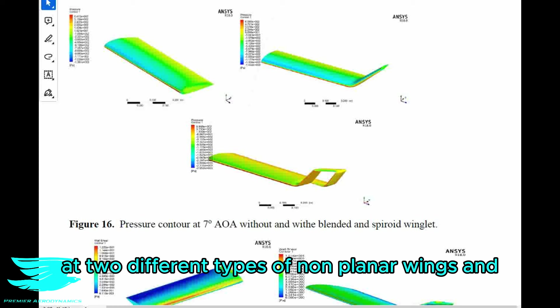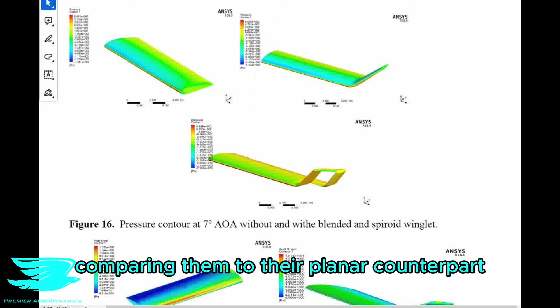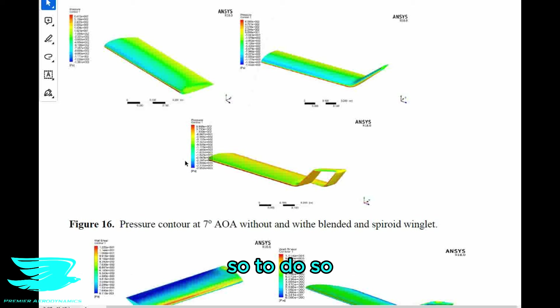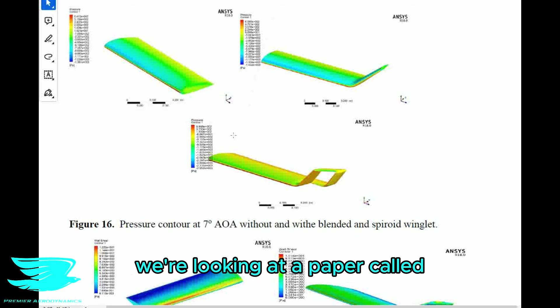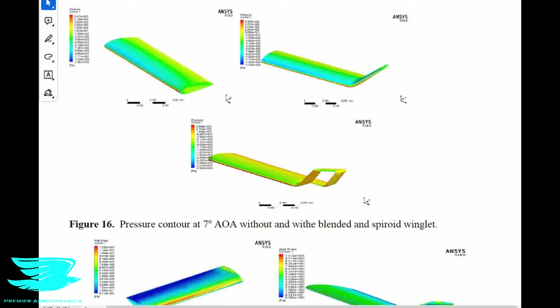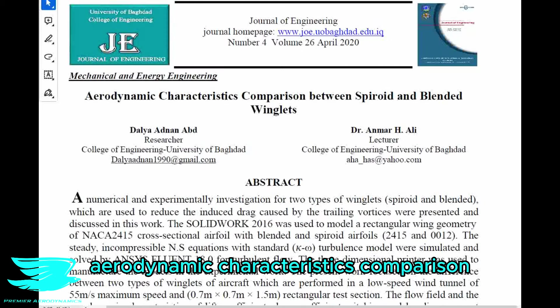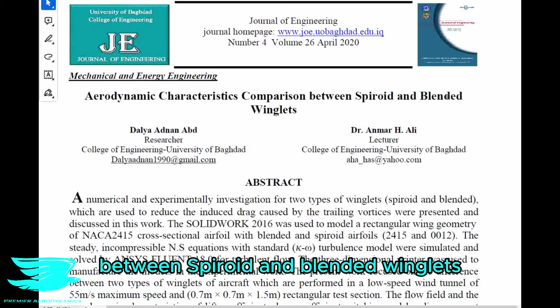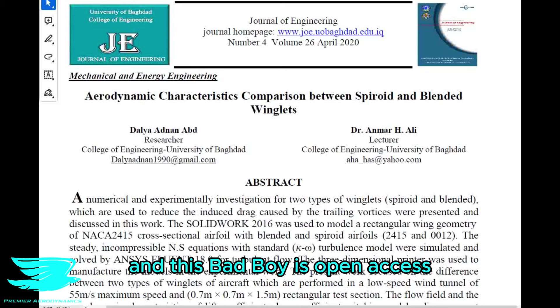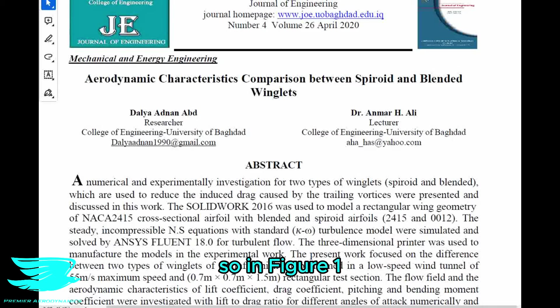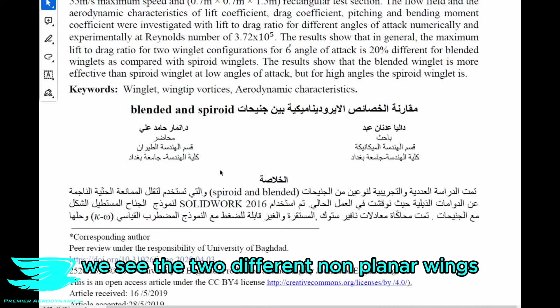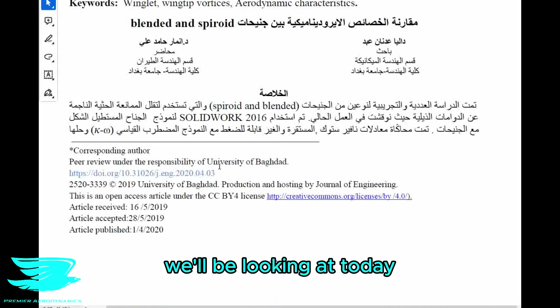We're looking at two different types of non-planar wings and comparing them to their planar counterpart. To do so, we're looking at a paper called 'Aerodynamic Characteristics Comparison Between Spiroid and Blended Winglets.' This paper is open access, so you can find it in the link in the description. In figure 1, we see the two different non-planar wings we'll be looking at today.